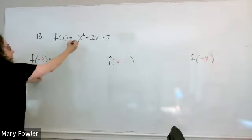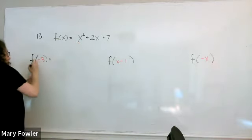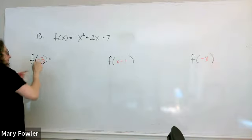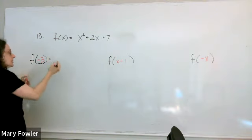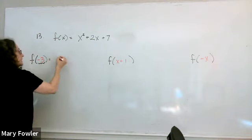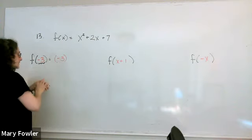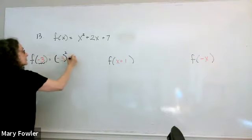So I'm going to substitute in wherever I see an x. I'm going to substitute whatever it is that's coming in through that function parenthesis notation. So in this case, it's minus 3. I'm going to substitute wherever there's an x, just going to put in a minus 3.